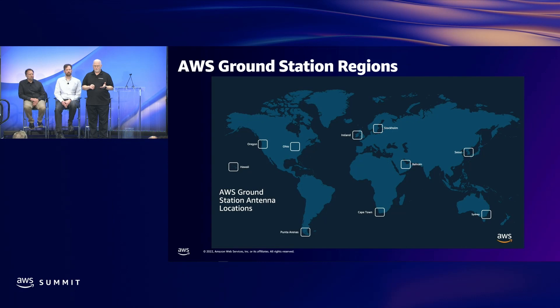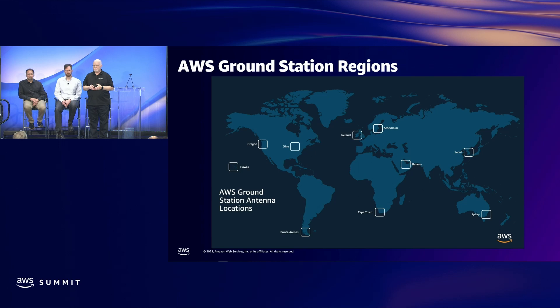If you've visited the AWS Ground Station website, you've seen this map — our region coverage for the service. When we launched in 2019, we offered it in two regions: US West 2 and US East 2, and today we have 10 with more regions on the way. To save customers cost and complexity, we developed a feature called Cross Region Data Delivery, and we'll talk more about that in a bit.